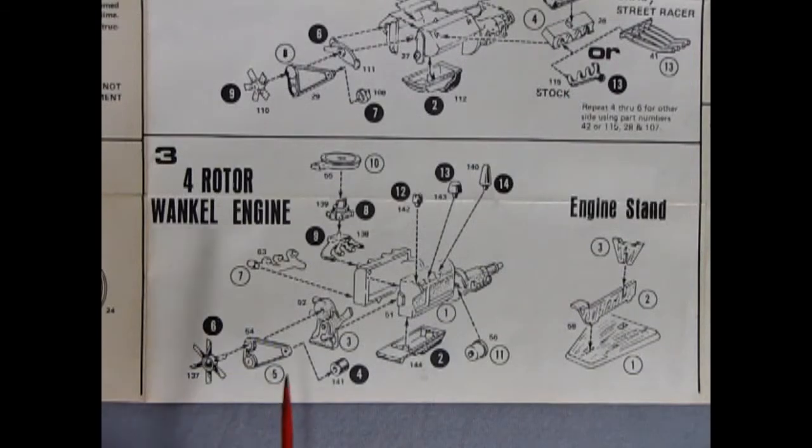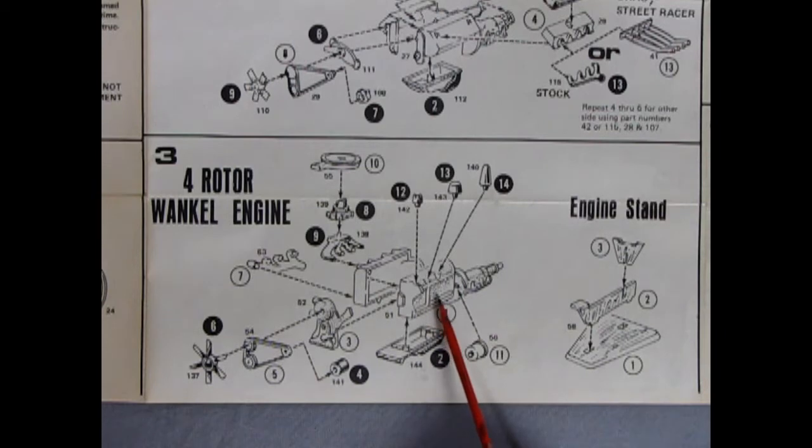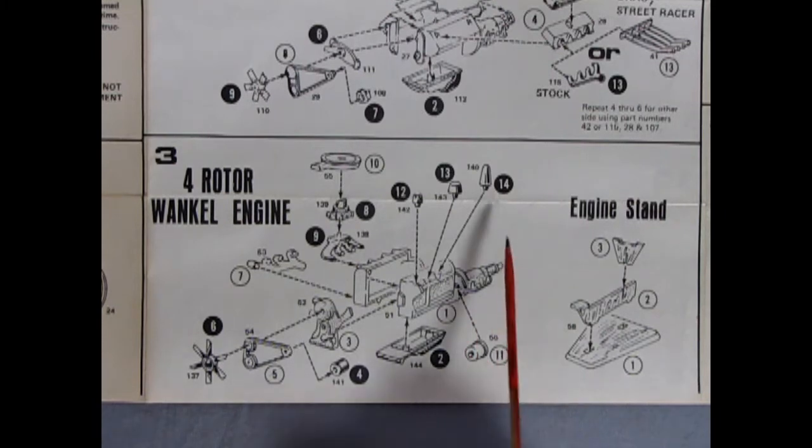This model car also includes the four rotor Wankel engine which was quite a new and exciting thing back in 1975. Of course we've got our two-piece engine with the differential on the back. We have a chrome oil pan and the starter motor as well as some other components. I'm not too sure how the Wankel works. I know it is an engine without a spark plug and without valves so I know that much but that's as far as it goes.